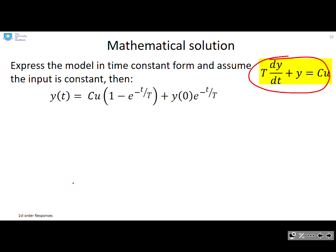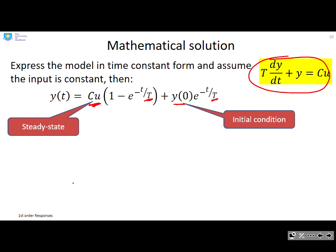Now I'm not going to derive this. You can do that in your mathematics module and it's relatively straightforward. But the key thing is you can see the solution depends on those core parameters. So the cu term appears here, the time constant T appears here and here and y(0) is the initial condition. So the steady state is given by this cu term. The initial condition there and the time constant there.